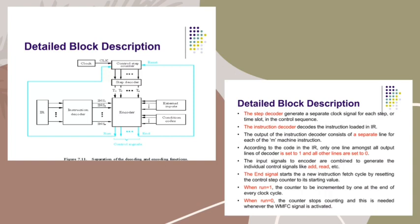When run is 1, the counter is incremented by 1 at the end of every clock cycle. When run is 0, the counter stops counting, and this is needed whenever the WMF signal is activated.